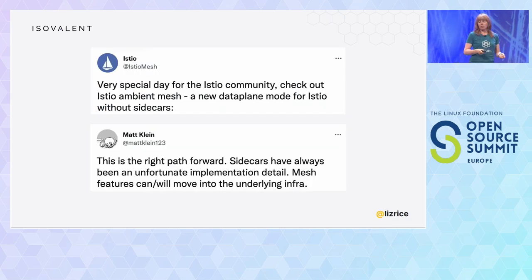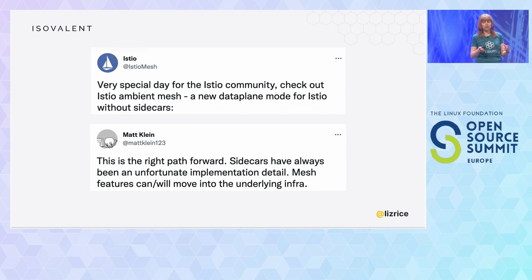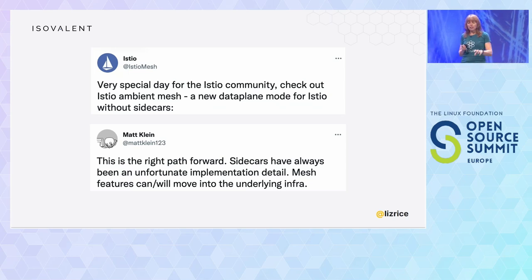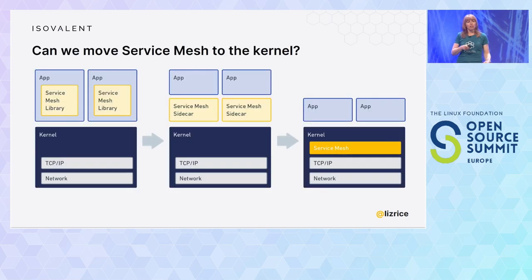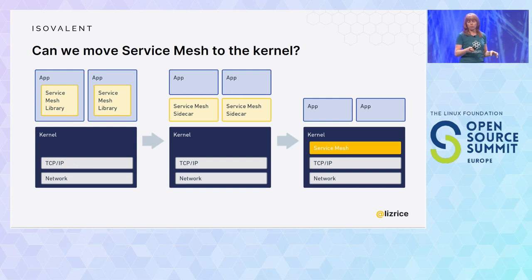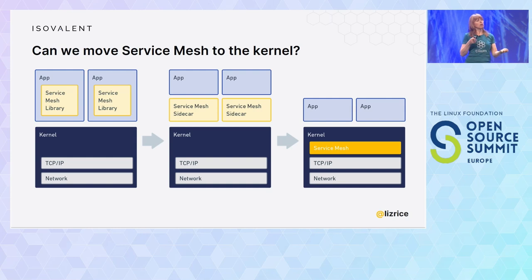Now other service meshes are also recognizing the benefits of removing sidecars. Istio introduced a sidecarless option just last week. There are a few differences in the way that Cilium and Istio are approaching this, but we're both taking sidecars out of the equation and using an Envoy proxy to handle those complex layer seven parts. The quote there: 'sidecars have always been an unfortunate implementation detail — mesh features will move to the underlying infrastructure.' That's really what we were asking ourselves in Cilium: can we move service mesh entirely into the kernel? We haven't moved everything into the kernel, but we've moved a significant part using eBPF, delegating responsibility to the Envoy proxy in user space to handle those complex layer seven processing tasks.